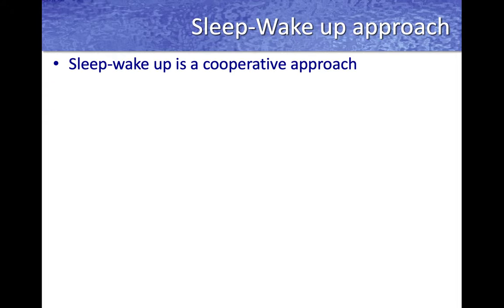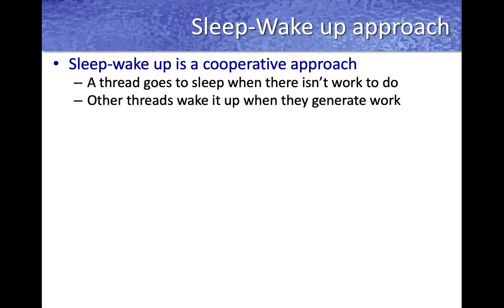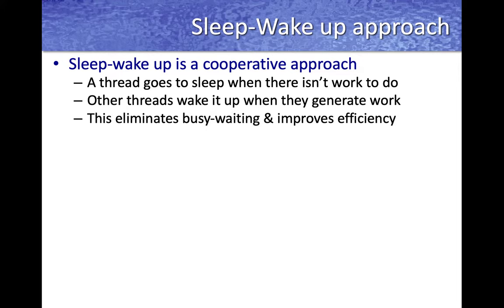Now let's look at the sleep-wakeup approach, which is an alternative for implementing the producer-consumer problem and addresses the efficiency issues of busy-wait. Here, a thread goes to sleep — into the blocked or waiting state — when there is no work to do. Another thread wakes up the sleeping thread when work is available. The producer wakes up a consumer thread every time it creates work to be processed, which eliminates busy-waiting and improves CPU and energy efficiency.